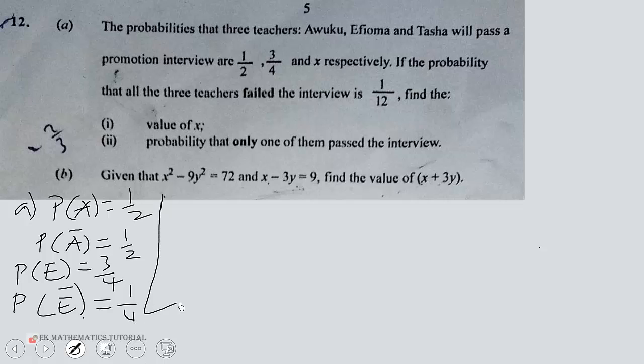You can show the working. The probability that Tasha will not pass is 1 minus x. And the question says that if the probability that